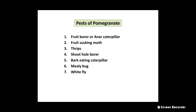There are a total of 7 major as well as minor pests of the pomegranate. The first one is Fruit Borer, also called Anarch Caterpillar; second is Fruit Sucking Moth; third is Thrips of Pomegranate; then Shoot Hole Borer; then Bark Eating Caterpillar; Mealybugs on Pomegranate; and last one is Whitefly on Pomegranate. Let us see them one by one.